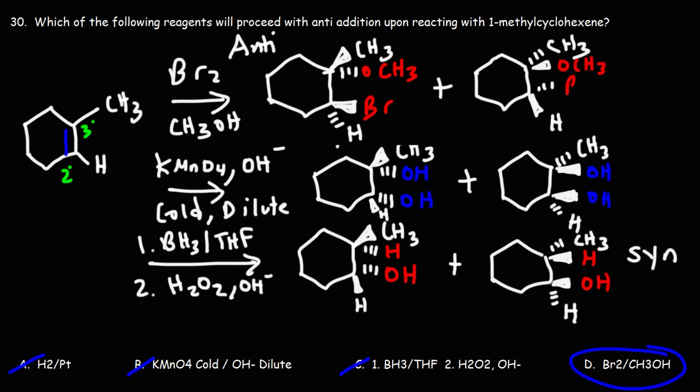So we're going to get a pair of enantiomers for this reaction. So you need to know which alkene reaction proceeds with anti-addition and which one proceeds with syn-addition. So this reaction is anti-addition. The other three are syn-addition reactions.